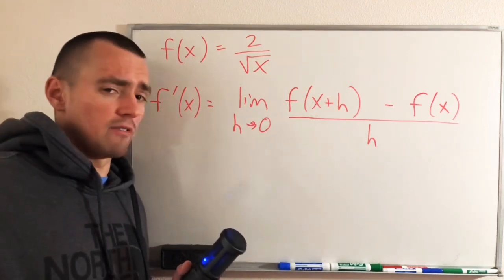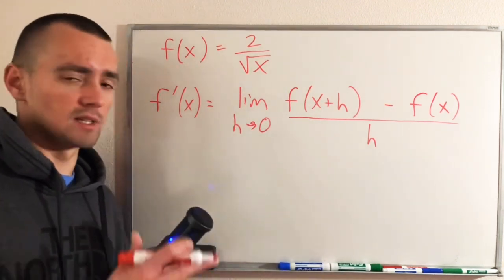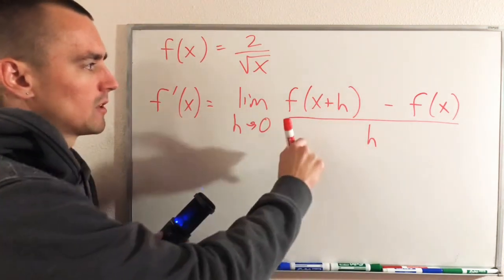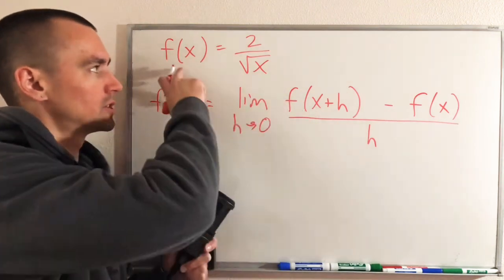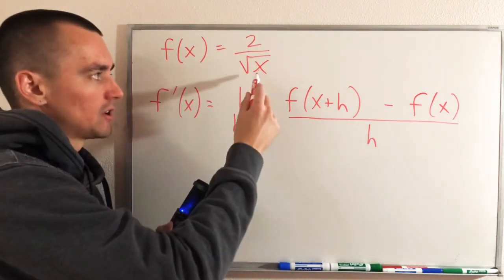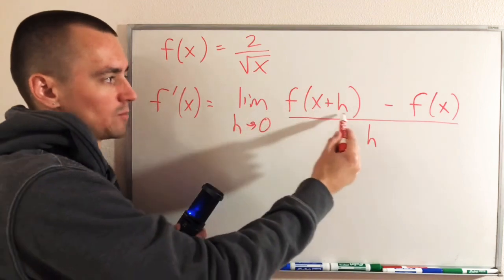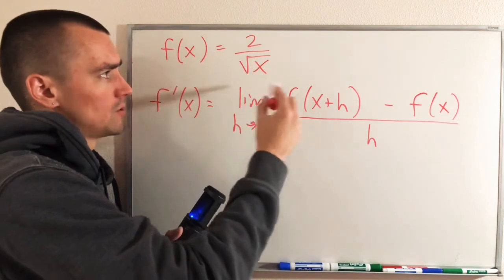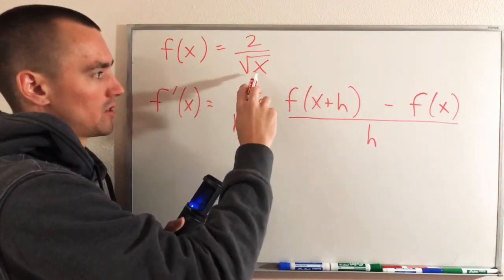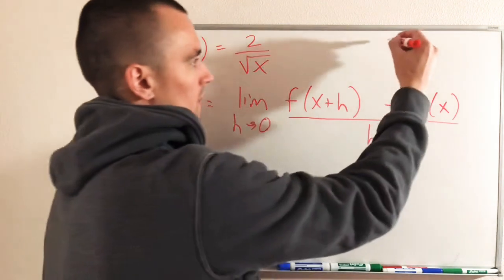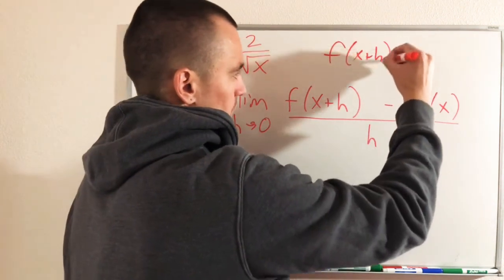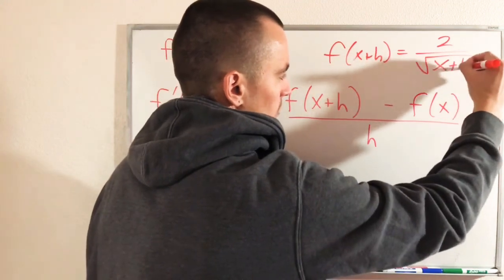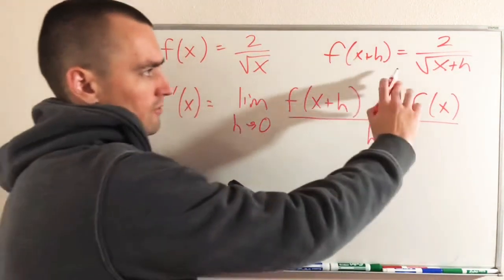The first thing I recommend doing whenever you're finding the derivative of any function using this limit definition is to first figure out what f(x+h) is. To figure that out, all you have to do is go to your function f(x) and take all of your x's and replace them with x+h. So in this case, we only have one x and it's within the square root. All we have to do is replace x with x+h, so that gives us f(x+h) equals 2 over the square root of x+h instead of just the square root of x.